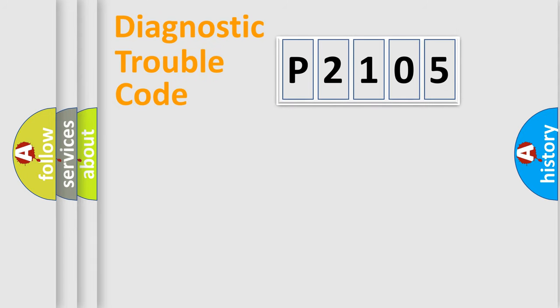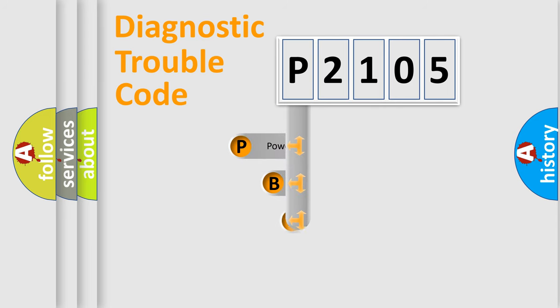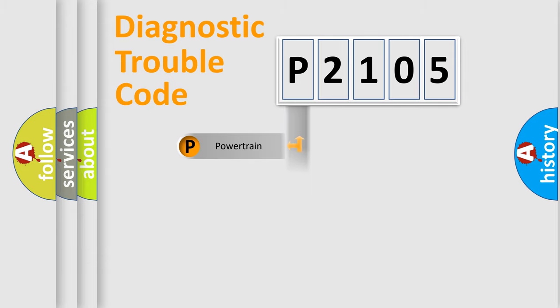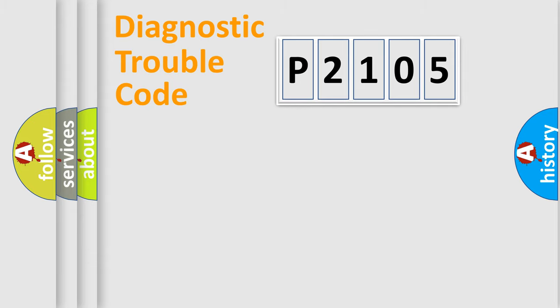Let's look at the history of diagnostic fault code composition according to the OBD2 protocol, which is unified for all automakers since 2000. We divide the electric system of an automobile into four basic units: Powertrain, Body, Chassis, and Network. This distribution is defined in the first character of the code.